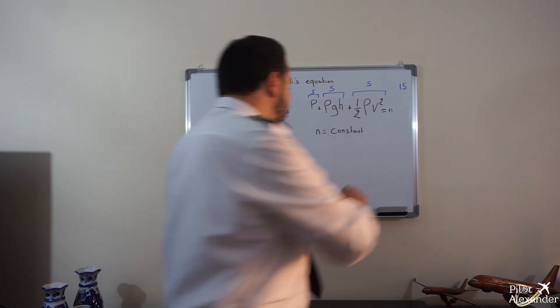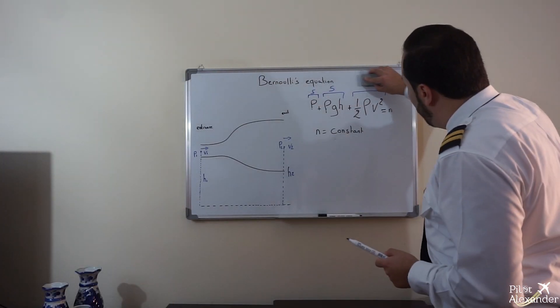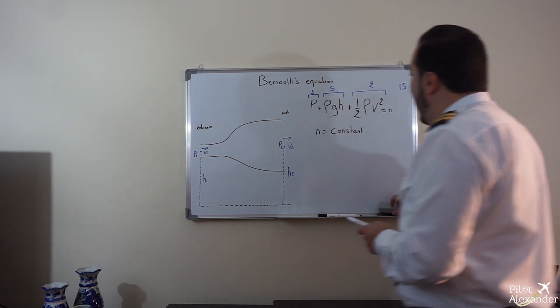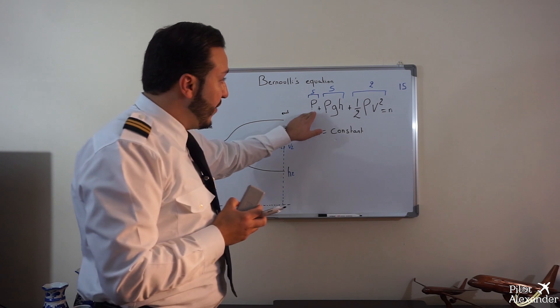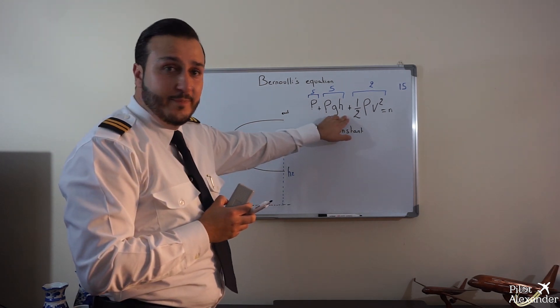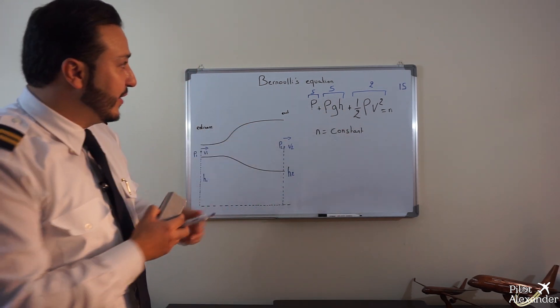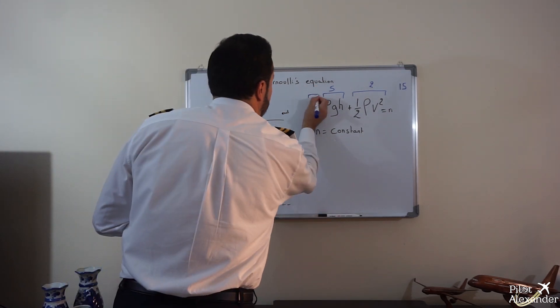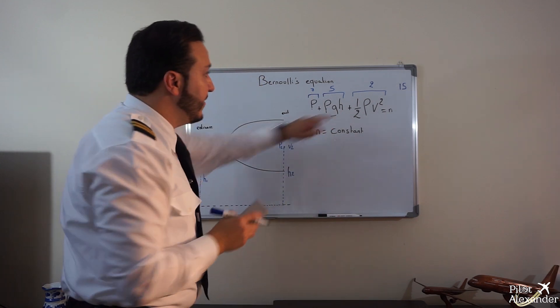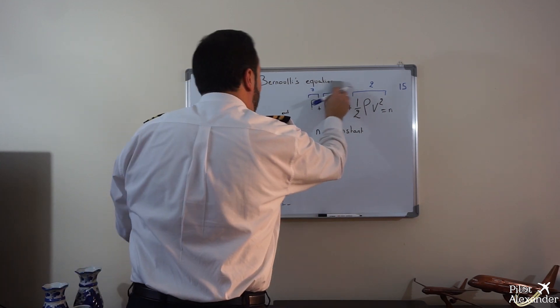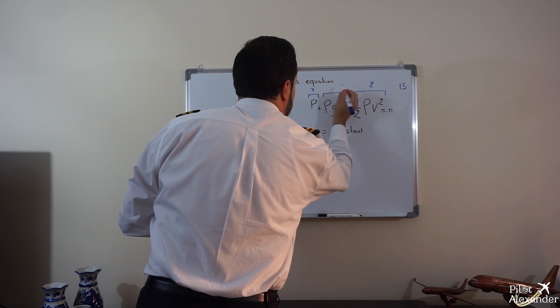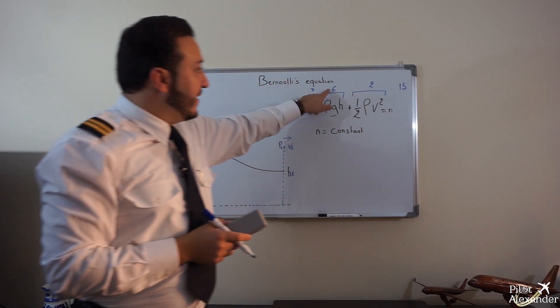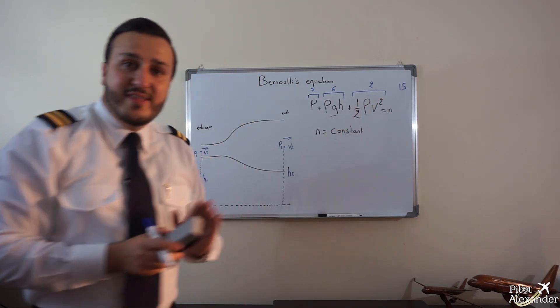So what do we have to do? We are decreasing the velocity—let's take it for example to two. So we have to increase either the pressure or the height. Here, definitely the pressure is going to increase—let's imagine to seven—and the height is going to increase, let's imagine to six. Now, seven plus six is thirteen, plus two is fifteen. So this is exactly it.